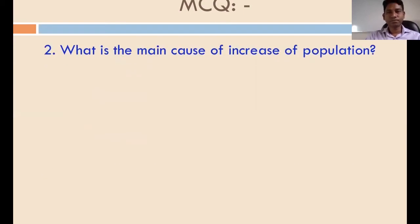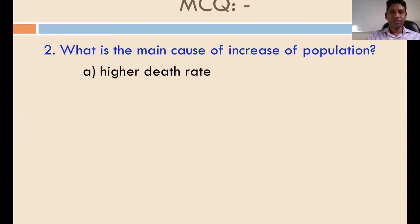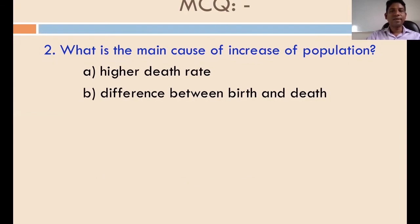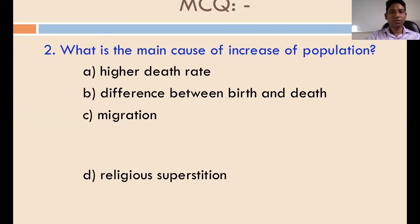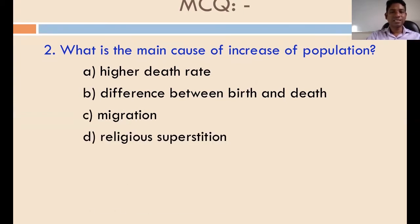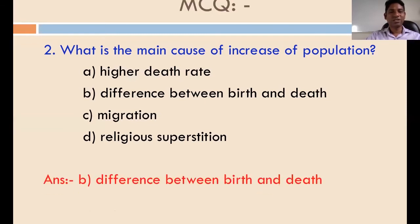MCQ number two: what is the main cause of increase of population? The options are higher death rate, the difference between birth and death, migration, and religious superstition. The answer is the difference between birth and death. You have to remember this.